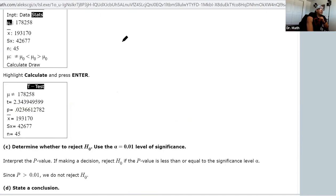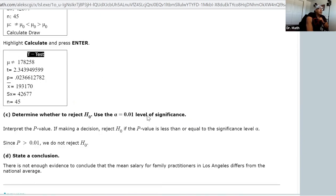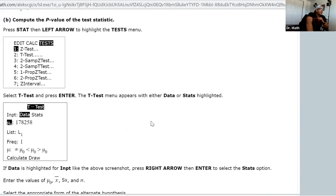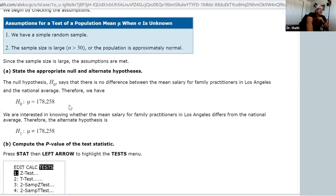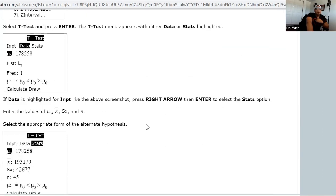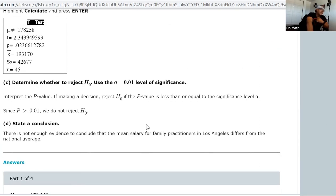When we state our conclusion, since we don't have enough evidence to reject this, that's not saying we're absolutely accepting it - we're just saying that there is not enough evidence to conclude the opposite, the alternate, which is saying that the mean salary for family practitioners in LA differs from the national average. We don't have enough evidence to show this based on our study here.